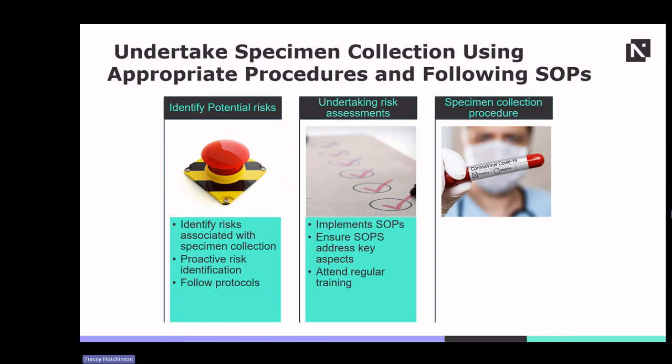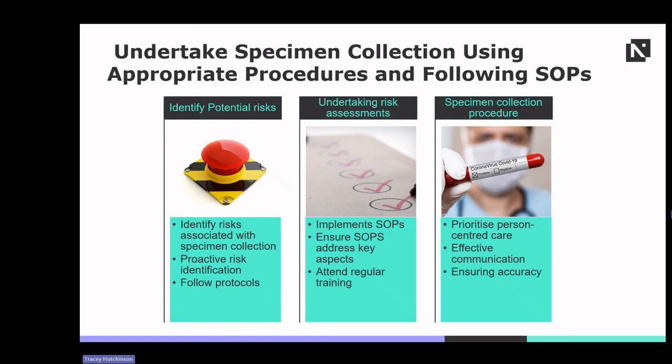In regards to specimen collection procedures, risk assessment measures are essential to ensure safety and accuracy. This involves prioritising person-centred care: tailor specimen collection procedures to meet the individual needs and preferences of patients, ensuring a compassionate and respectful approach. Foster open communication between healthcare professionals and patients throughout the specimen collection process, addressing any concerns or requests promptly. Maintain strict adherence to quality control measures and protocols to minimise errors and ensure the integrity of collected specimens.